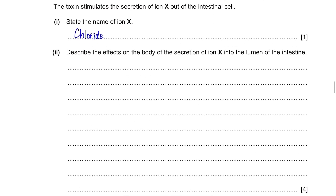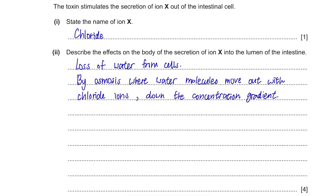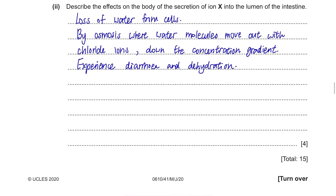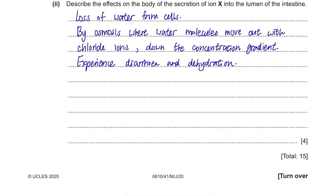Describe the effects on the body of the secretion of ion X into the lumen of the intestine. When chloride ions are lost, one of the symptoms of cholera is dehydration — there will be loss of water from the cells. This is due to osmosis, where water molecules move down the water potential gradient since chloride ions are moved out. The person infected may experience diarrhoea and dehydration. That is the end of this video — I will solve the next questions in my next video. Thank you for watching.